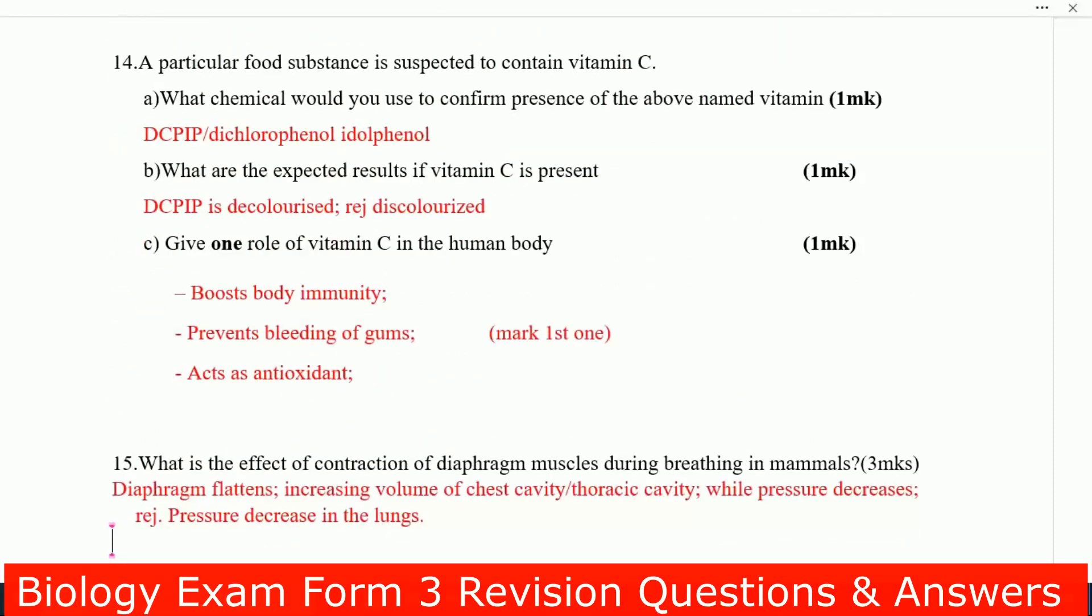Number 14, a particular food substance is suspected to contain vitamin C. What chemical do you use to confirm presence of the above named vitamin? You use the DCPIP, dichlorophenolindophenol. It is the one you use to test the vitamin C.